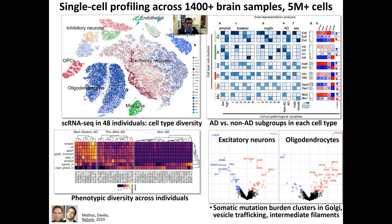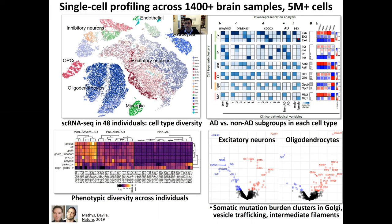What we've systematically done is looked at 1,400 post-mortem brain samples across a dozen different disorders and 5 million-plus cells, including Alzheimer's disease, schizophrenia, and multiple other disorders. We can now start looking at every single dot as a cell and how are the expression patterns of all of these cells capturing the heterogeneity of these cell types as individuals progress from non-Alzheimer's to early Alzheimer's to late Alzheimer's disease.